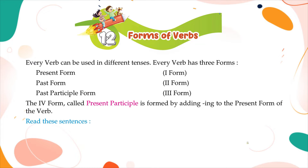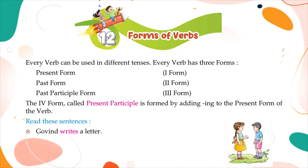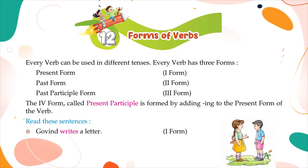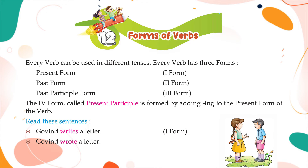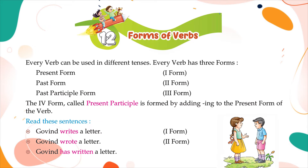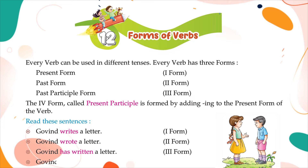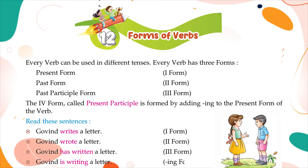Read these sentences. Govind writes a letter — first form. Govind wrote a letter — second form. Govind has written a letter — third form. Govind is writing a letter — ing form.